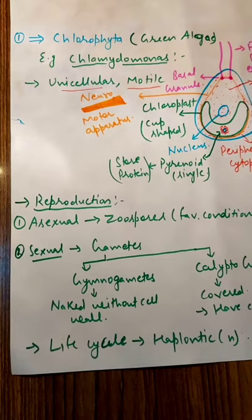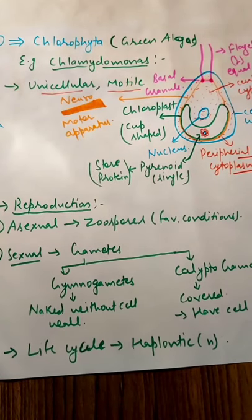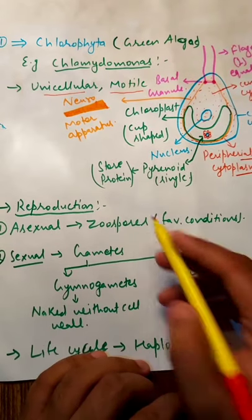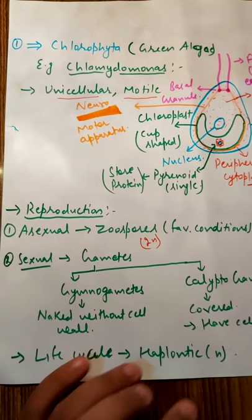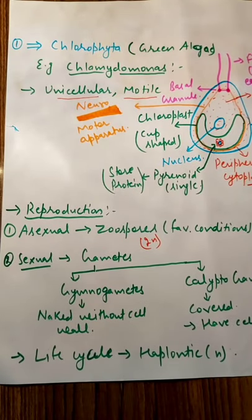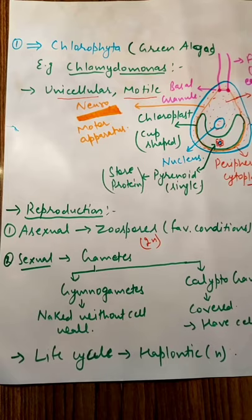Life cycle of Chlamydomonas is haplontic. Haplontic means most of the life cycle stages possess haploid chromosome content। कोई भी individual life में एक बार haploid होगा और एक बार diploid होगा। Most of the time Chlamydomonas haploid रहता है और कुछ-कुछ points पे diploid बनता है जैसे zoospore formation पे। तो ऐसा life cycle जिसमें majority time haploid होता है उसको haplontic life cycle बोलते हैं। So this is about Chlamydomonas and the general introduction of plant kingdom.